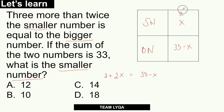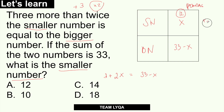Because of PEMDAS, multiplication comes before addition. So for 'three more than twice the smaller number,' you do times 2 first, then plus 3. So: 12 times 2 is 24, plus 3 gives you 27. That means the bigger number would be 27. But 12 plus 27 is 39, not 33. So 12 is wrong — the result is too big. I can eliminate it.